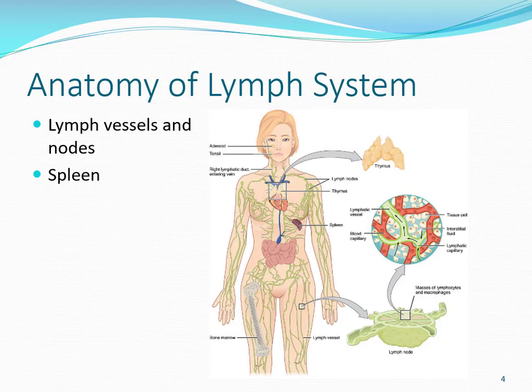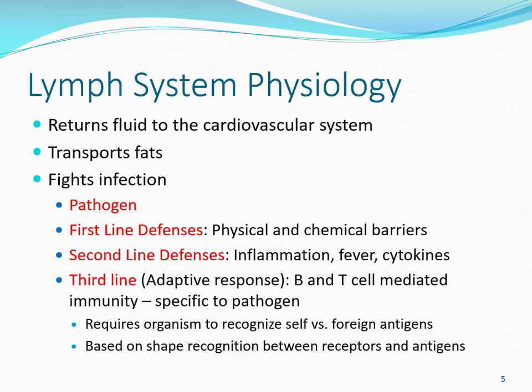The main organ is the spleen. It has a lot of white blood cells and helps fight off infection. Sometimes people lose their spleen — it ruptures or is damaged — and you can survive without it. The liver takes over some of its functions, but you may have a weaker immune system after removal. The lymph system functions to return fluid to the cardiovascular system and transport fat to the blood, but its main job is to fight off infection.